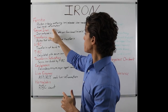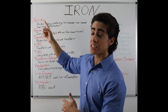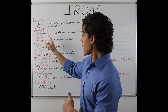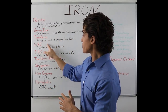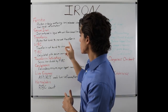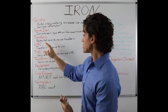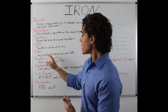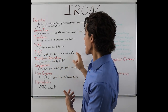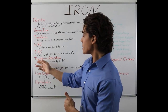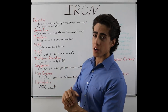Ferritin is a protein in the blood containing iron that releases it when needed — this can mark inflammation in the liver. Serum iron is iron contained in the liquid left over from blood with no blood cells present. Transferrin is a protein that binds to iron and transfers it. UIBC is unsaturated iron binding capacity — transferrin not bound to iron. TIBC is total iron binding capacity, calculated with serum iron and UIBC. Transferrin saturation is serum iron divided by total iron binding capacity.